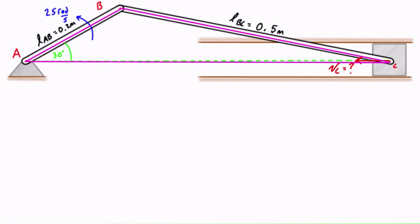We'll label each of these sides with a small letter that's opposite the angle, so small a will be across from big A, small c will be across from big C, and small b will be across from big B. The next thing we want to do is identify which side is going to be experiencing a change in linear length as the angle changes.